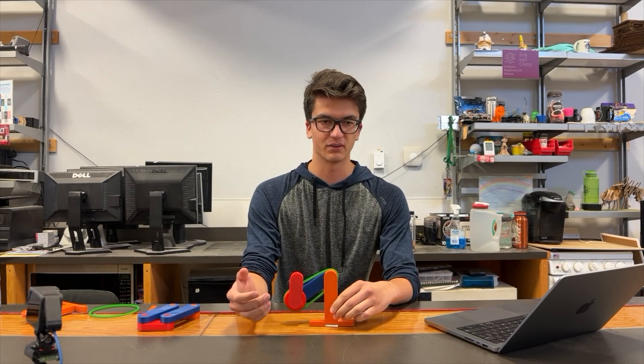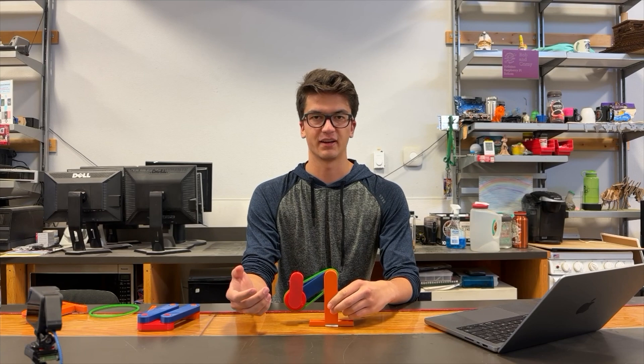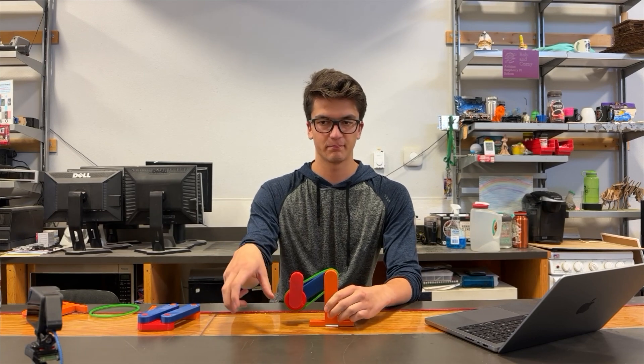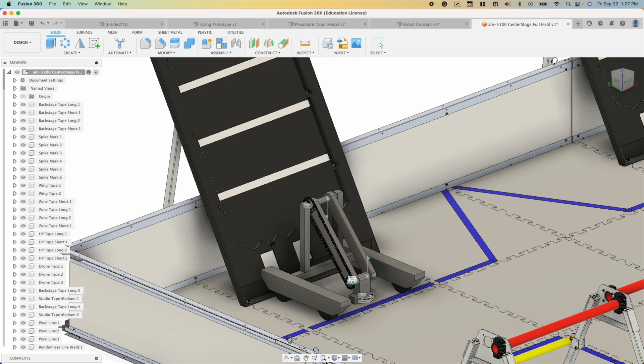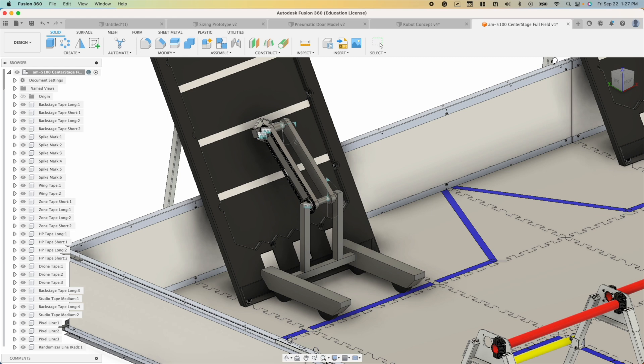You could imagine a robot where it would have some end effector, like a claw, that would need to be perpendicular to the ground as it's grabbing the pixel. And then it could rotate 180 degrees around and have the pixel parallel now to the backdrop where it's able to place it.